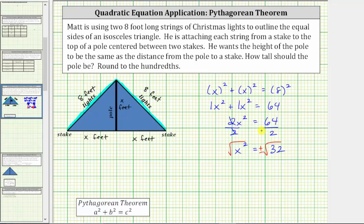But we know in our case x is a length, and therefore we are only concerned about the principal square root or positive square root. The square root of x squared equals x. We have x equals plus or minus the square root of 32.